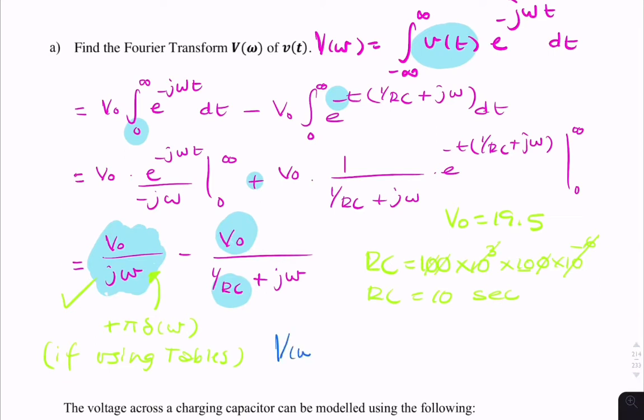V of omega equals 19.5 times 1 over j omega minus 1 over 0.1 plus j omega. This is the final answer for part A.